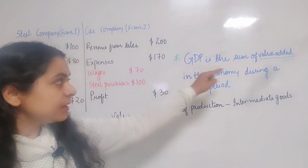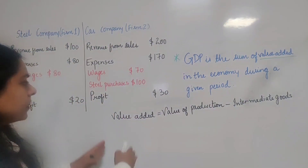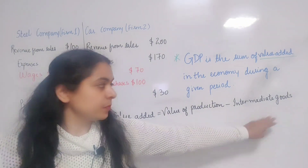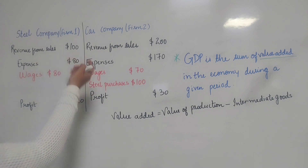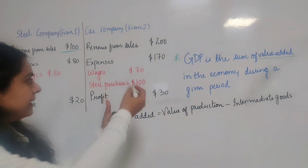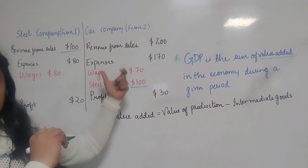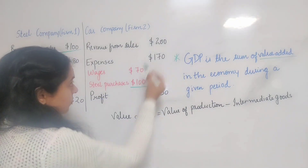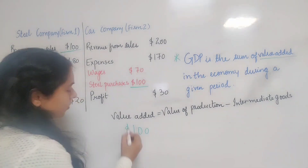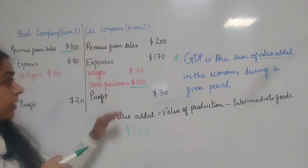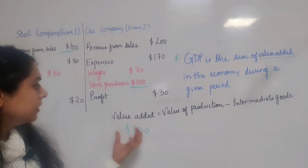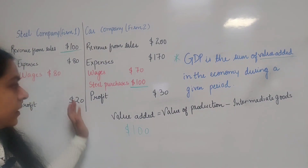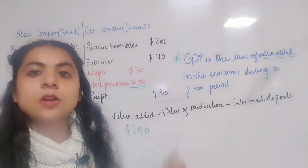Another way to define GDP: GDP is the sum of value added in the economy during a given period. Value added by a firm equals the value of its production minus intermediate goods. The steel company uses no intermediate goods, so its value added is $100. The car firm uses steel as an intermediate good, so value added is $200 minus $100, which equals $100. Adding value added by firm one ($100) and firm two ($100) gives total value added of $200, representing GDP.